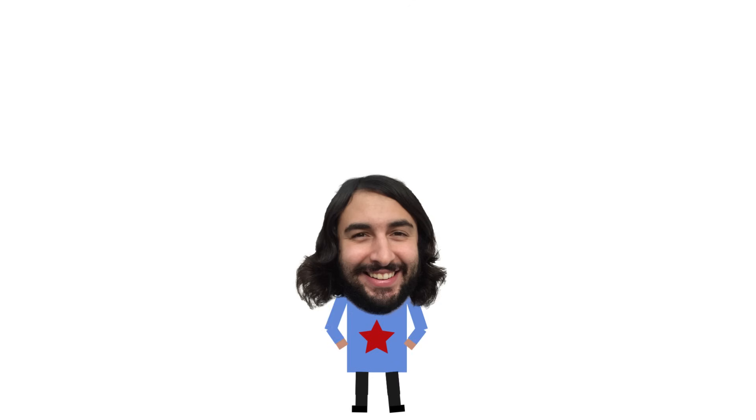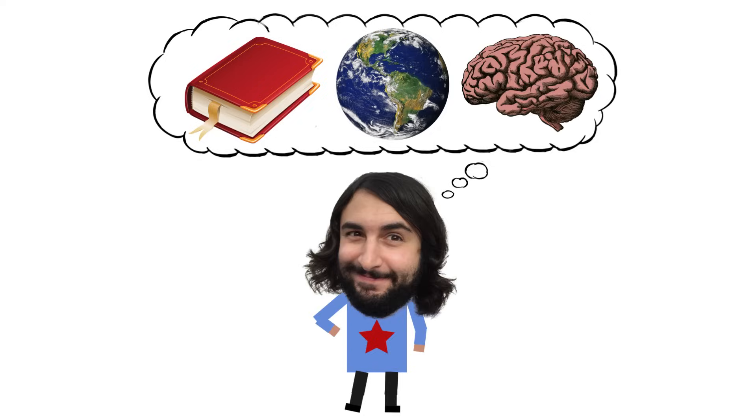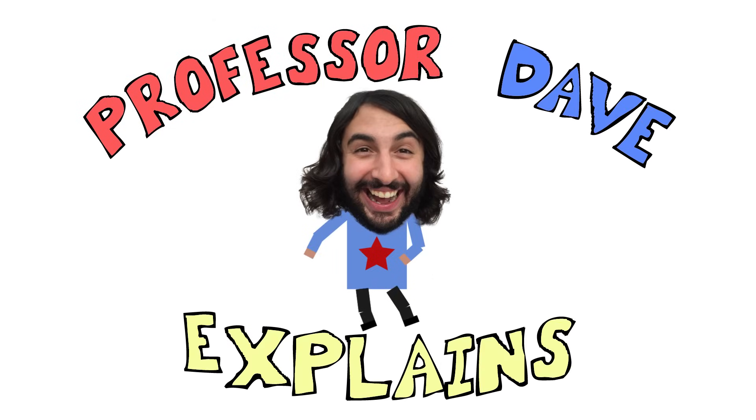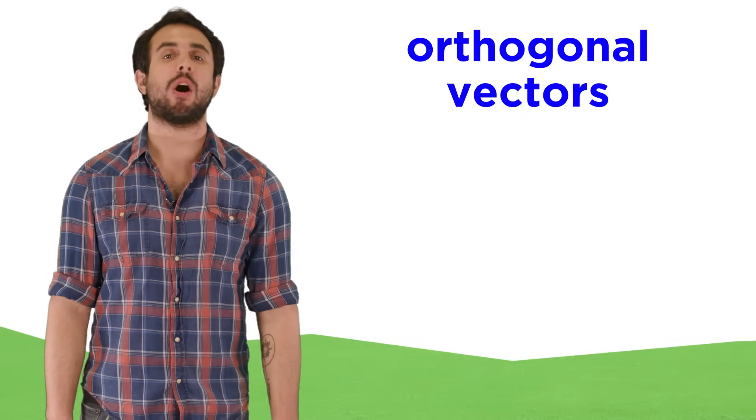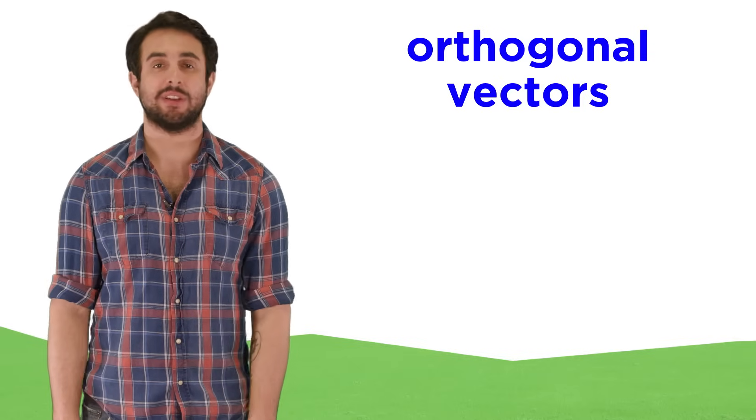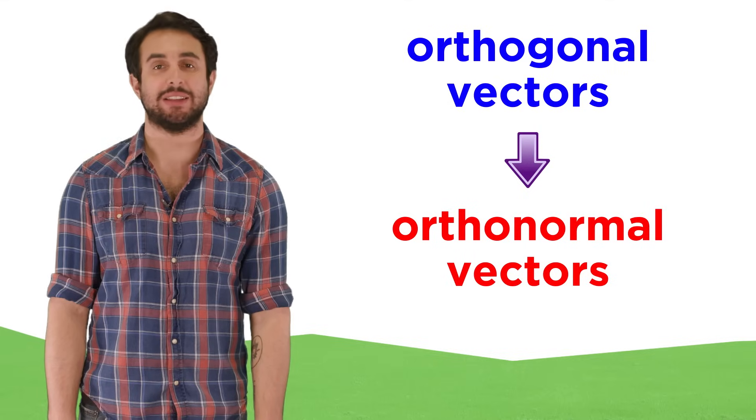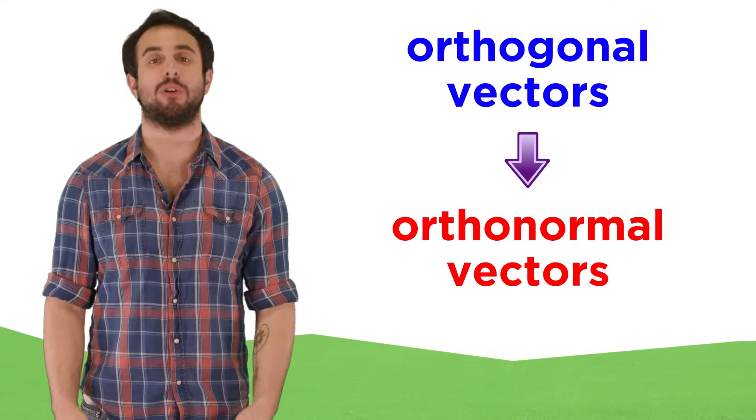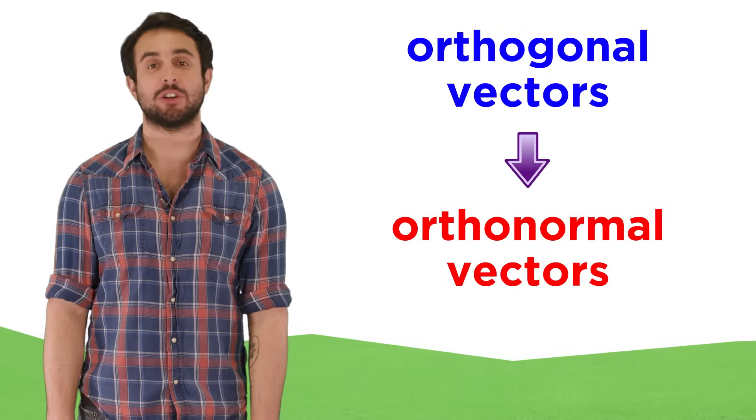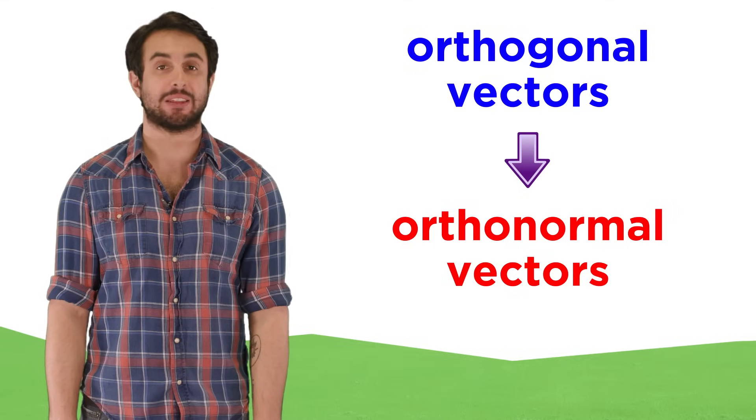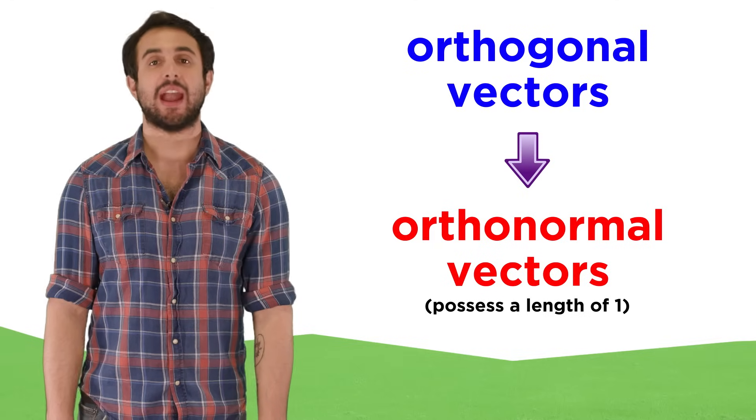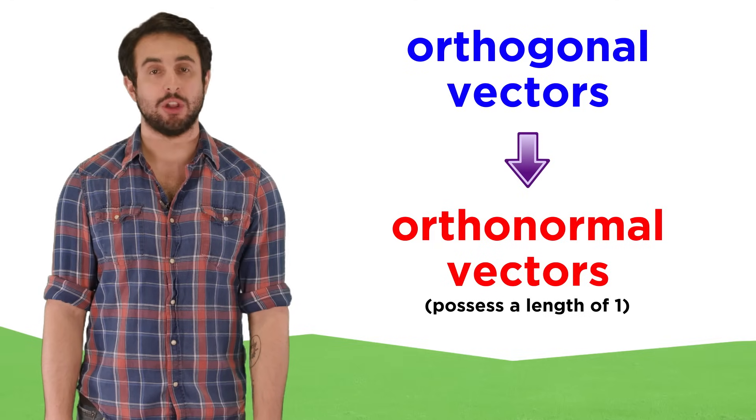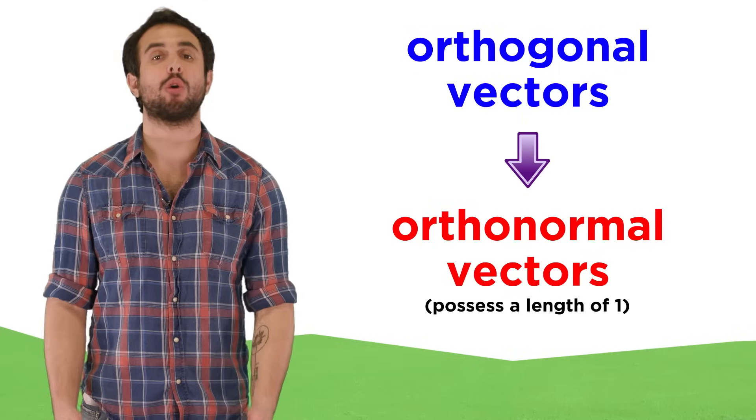Professor Dave here, I want to teach you the Gram-Schmidt process. In the previous tutorial, we learned all about orthogonal vectors and how we can generate from these a set of orthonormal vectors by taking each vector and dividing it by its length. This makes each vector's length equal to one, and since they were already orthogonal, the new vectors become orthonormal.